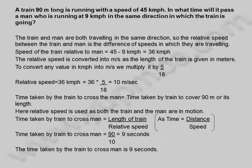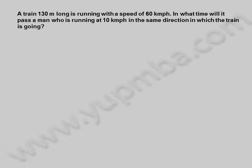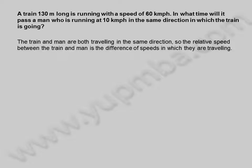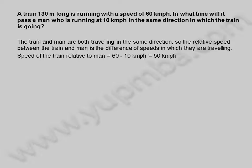Let us see another example. A train 130 meters long is running with a speed of 60 kilometers per hour. In what time will it pass a man who is running at 10 kilometers per hour in the same direction in which the train is going? The train and man are both traveling in the same direction, so the relative speed is the difference of speeds. Speed of the train relative to man is equal to 60 minus 10 kilometers per hour, which equals 50 kilometers per hour.